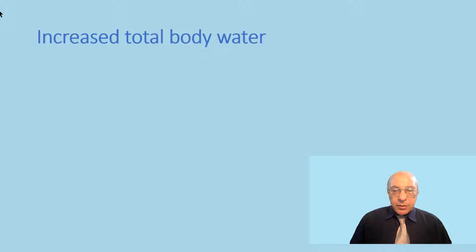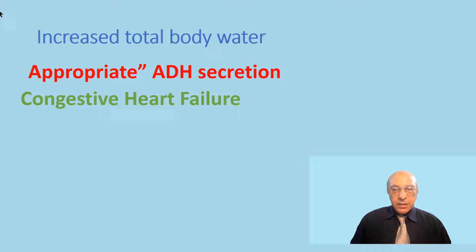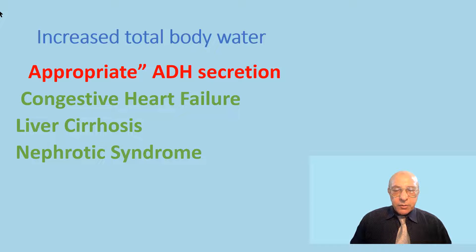The other big category is due to increased total body water, which can occur because of many causes. The first of which is what we call appropriate anti-diuretic hormone secretion, as occurs in cases of congestive heart failure, nephrotic syndrome, or liver cirrhosis, in which the circulating blood volume is decreased below normal, stimulating the volume receptors in the aortic arch, which results in stimulation of anti-diuretic hormone secretion, preventing water secretion through the kidney and increasing total body water.